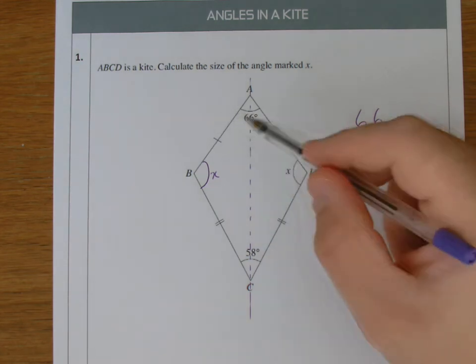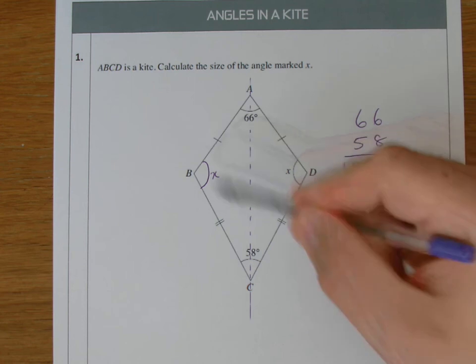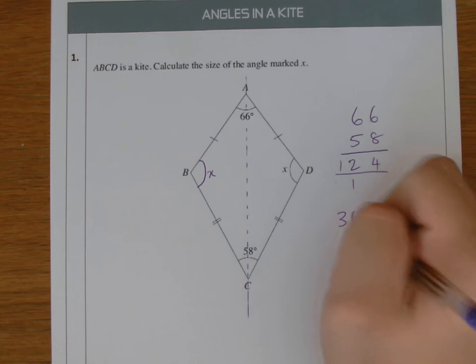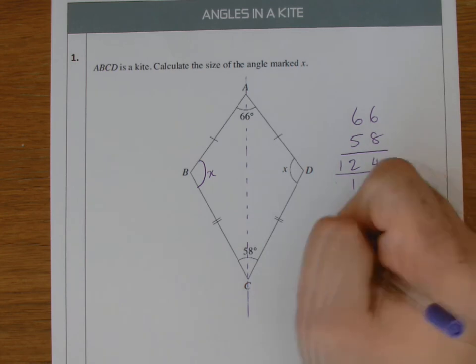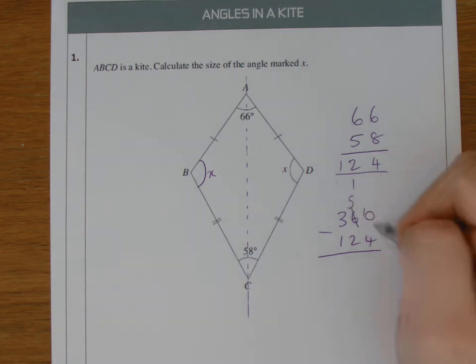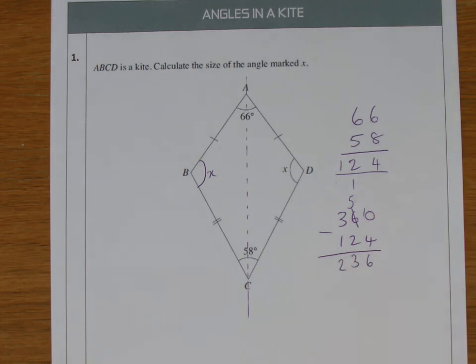But don't forget, this is a quadrilateral - four sides. So we know that angles inside the quadrilateral add up to 360. So if I take away 124 from 360: zero take away four you can't do, so we borrow. It's a 5 and then it becomes a 10. 10 take away 4 is 6, 5 take away 2 is 3, 3 take away 1 is 2. So taking those two angles away from 360, we're left with 236. 236 for both of these angles.